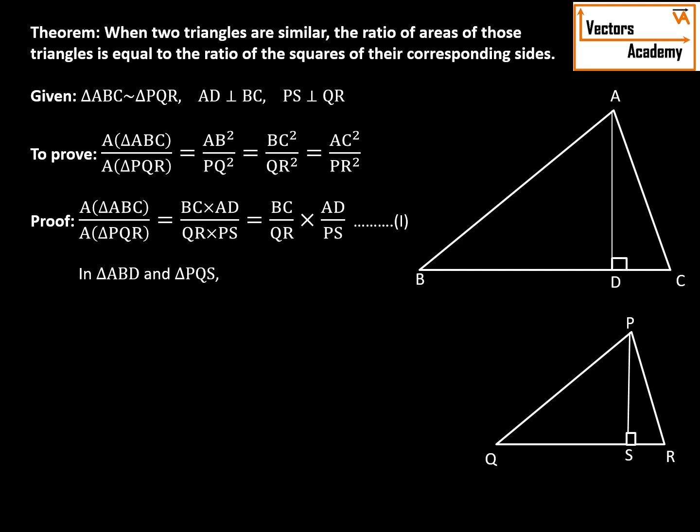You can see angle B and angle Q are already equal because they are the angles of the similar triangles. So we can see that is given and we know that angle ADB and angle PSQ are 90 degrees.